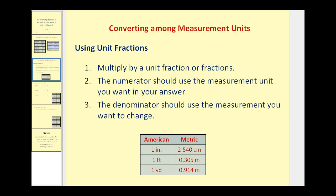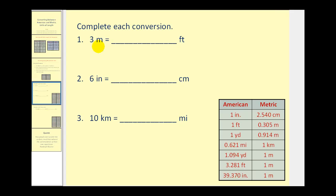Let's go ahead and take a look at a few examples. Number one, we want to convert three meters to feet. The first step is to write three meters in fraction form, so we'll write three meters over one. Now we're going to multiply by a unit fraction based upon the information from this table. We would like to find a conversion from meters to feet. In this row here, we see one meter is equal to three point two eight one feet.